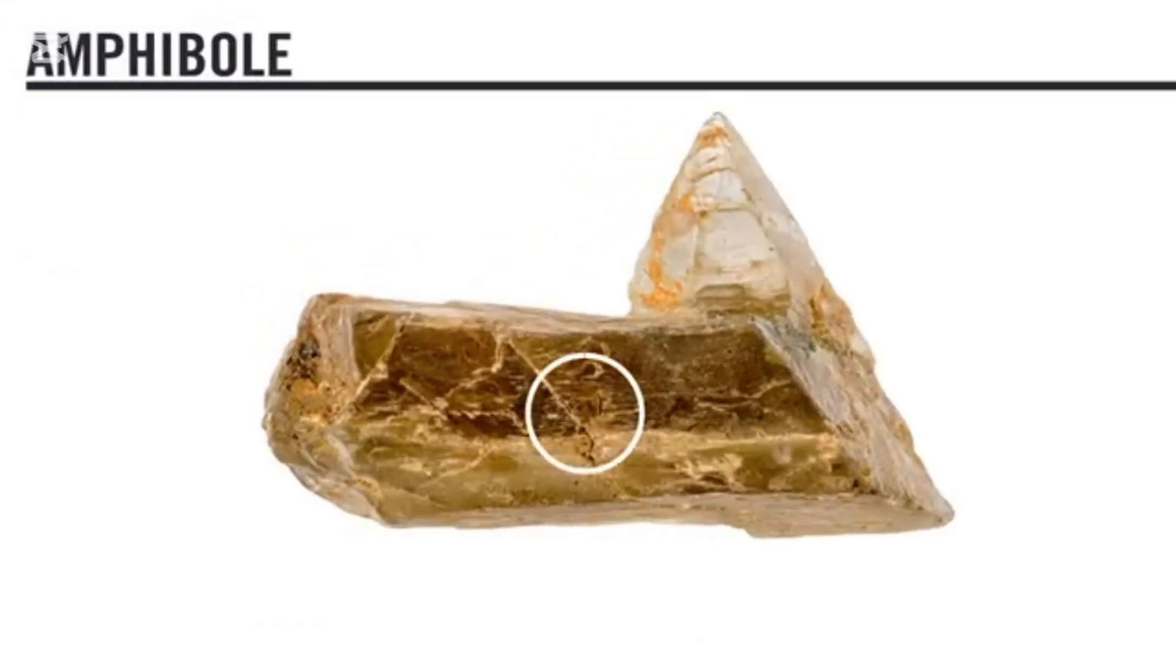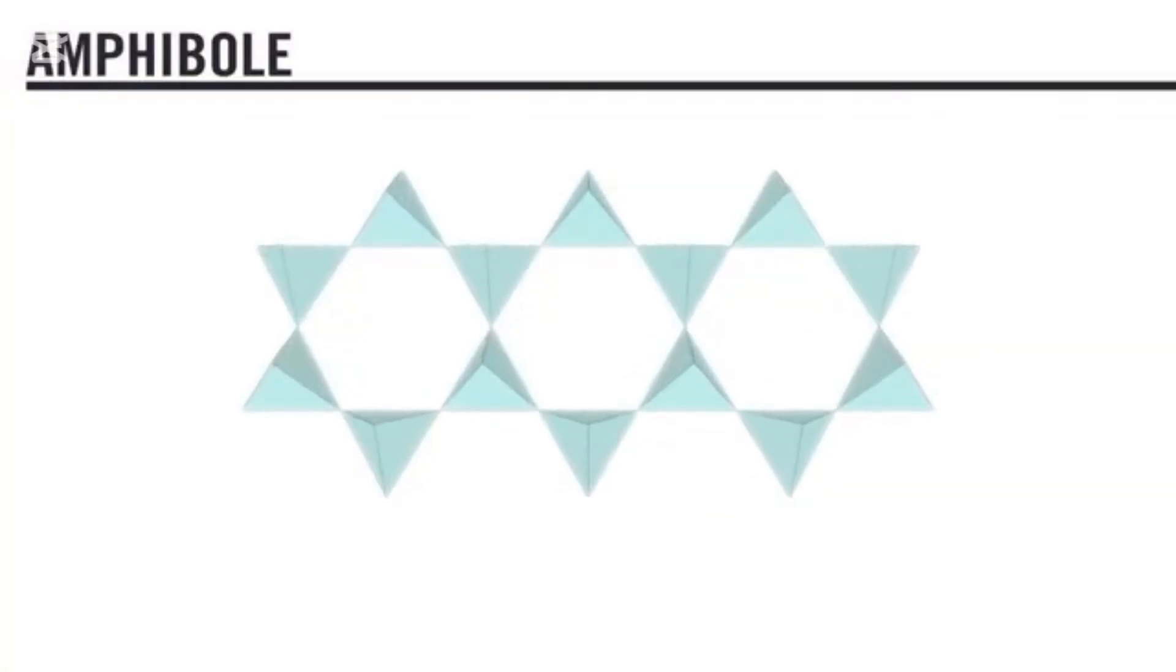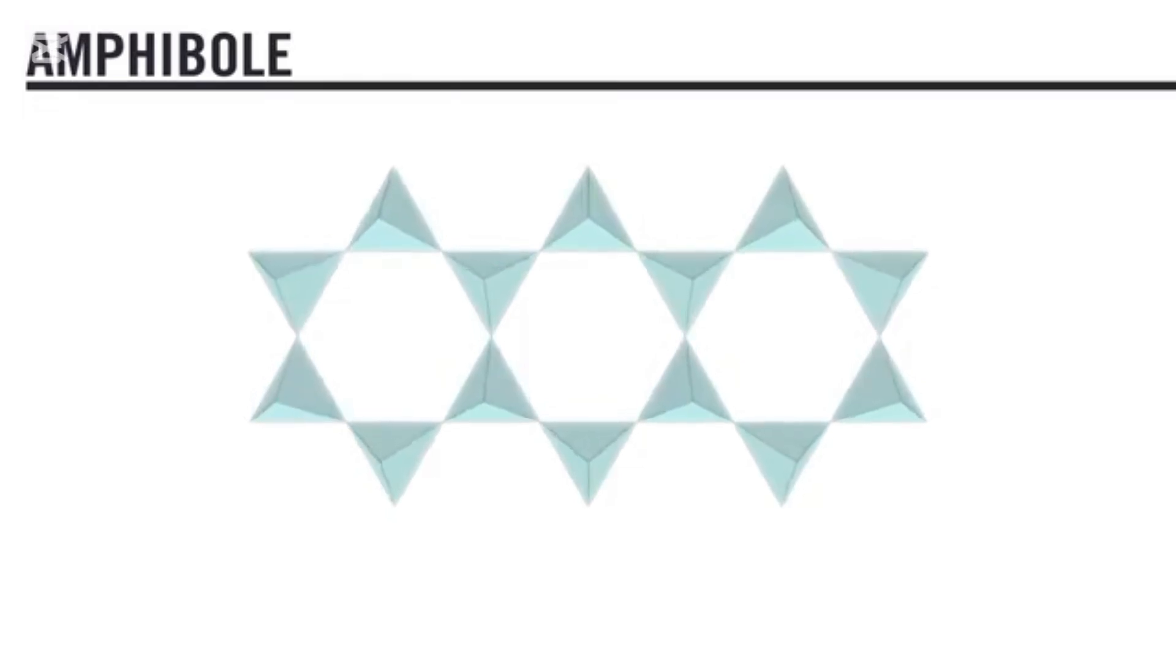Amphibole minerals form next, at cooler temperatures. Amphibole minerals contain sodium, calcium, iron, magnesium, and silica, so as these minerals form, the melt is now becoming depleted in those elements. Amphibole minerals have silica ions linked together in double chains.